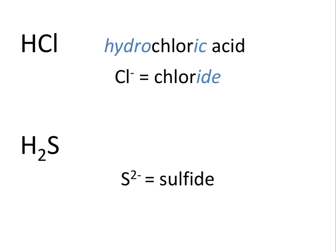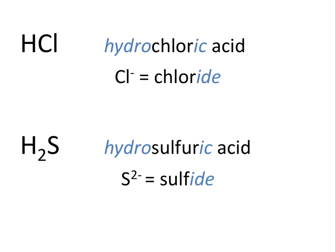When we look at the compound H₂S, if we were to name it as an acid, we know that the anion of sulfur has the name sulfide, so we would change the -IDE ending to -IC and add hydro- as a prefix, giving hydrosulfuric acid.